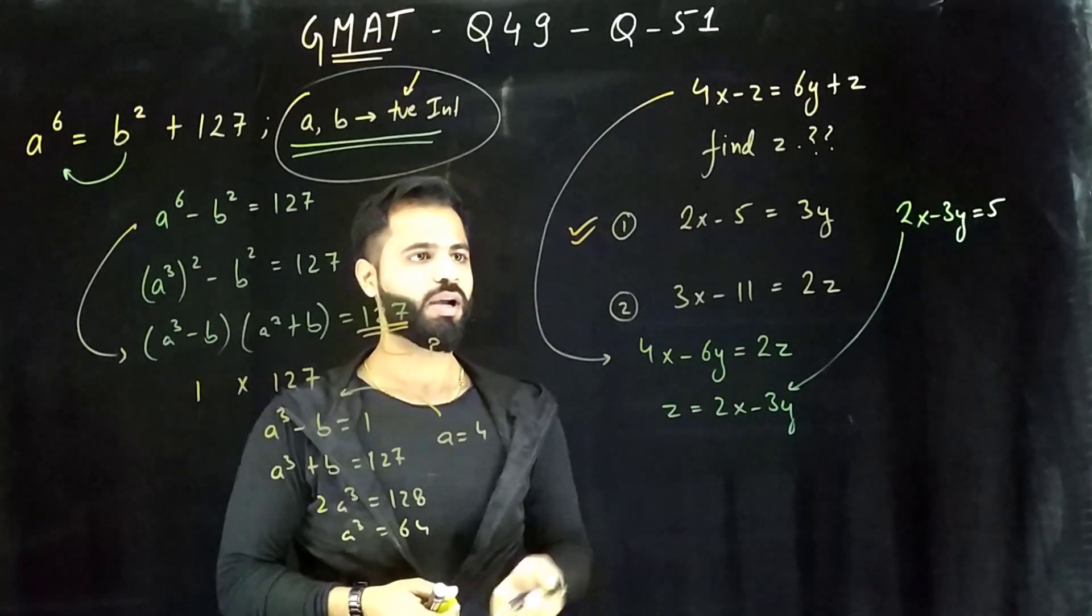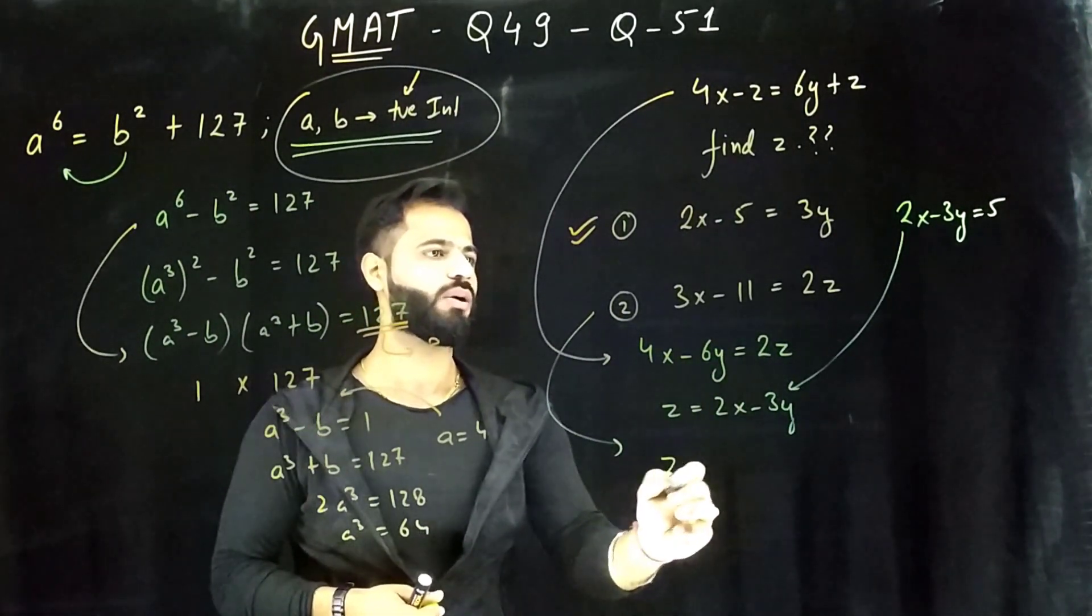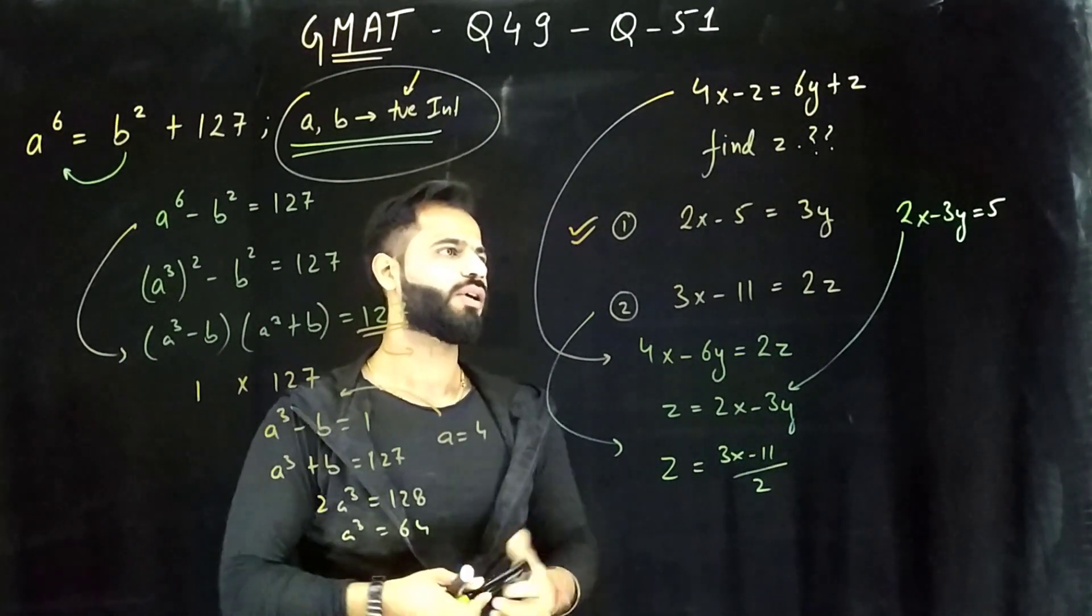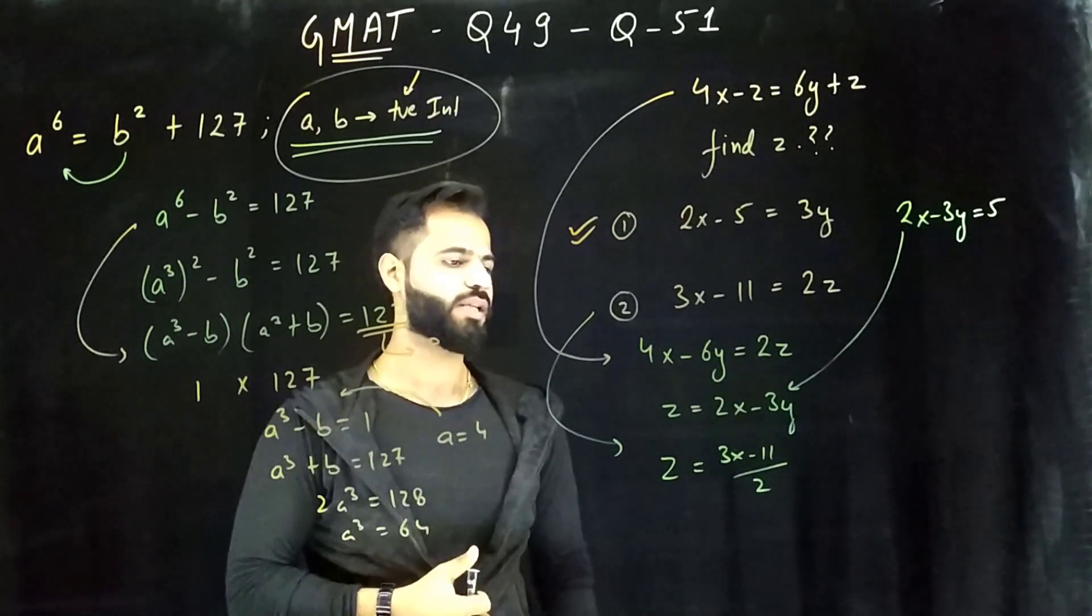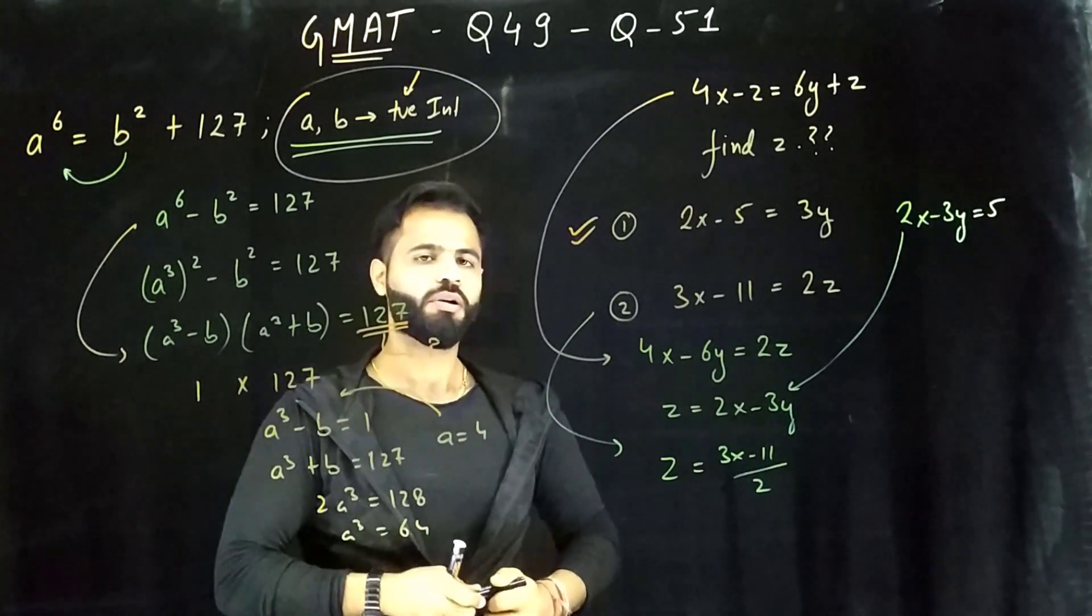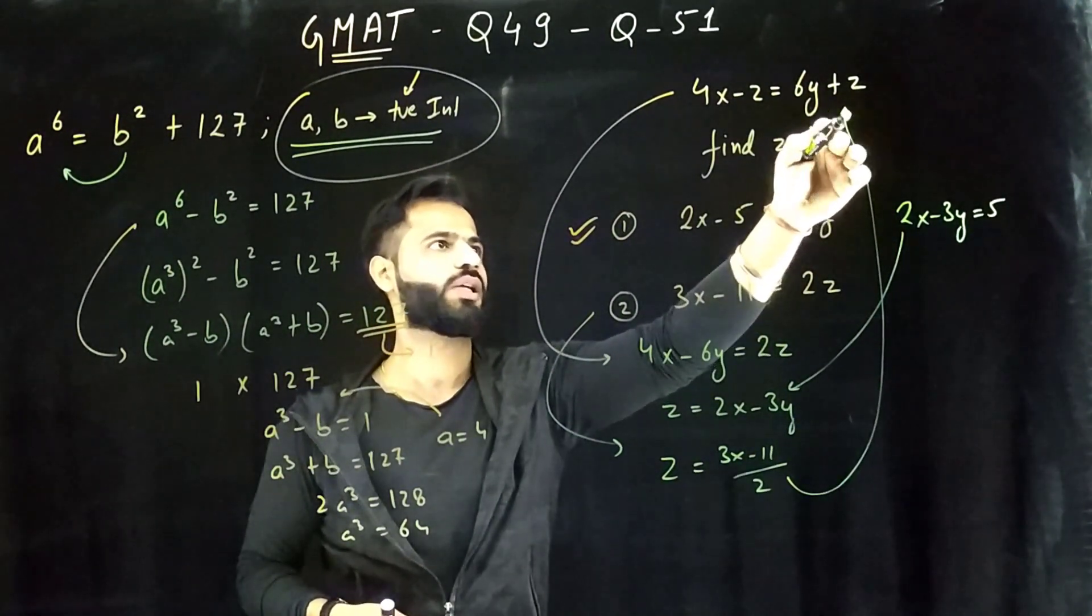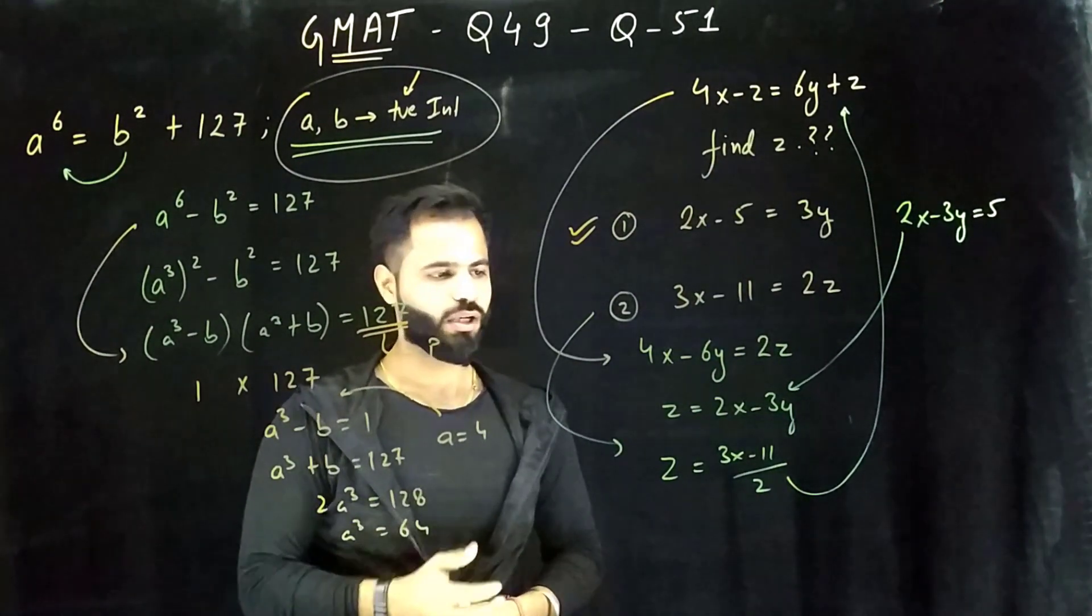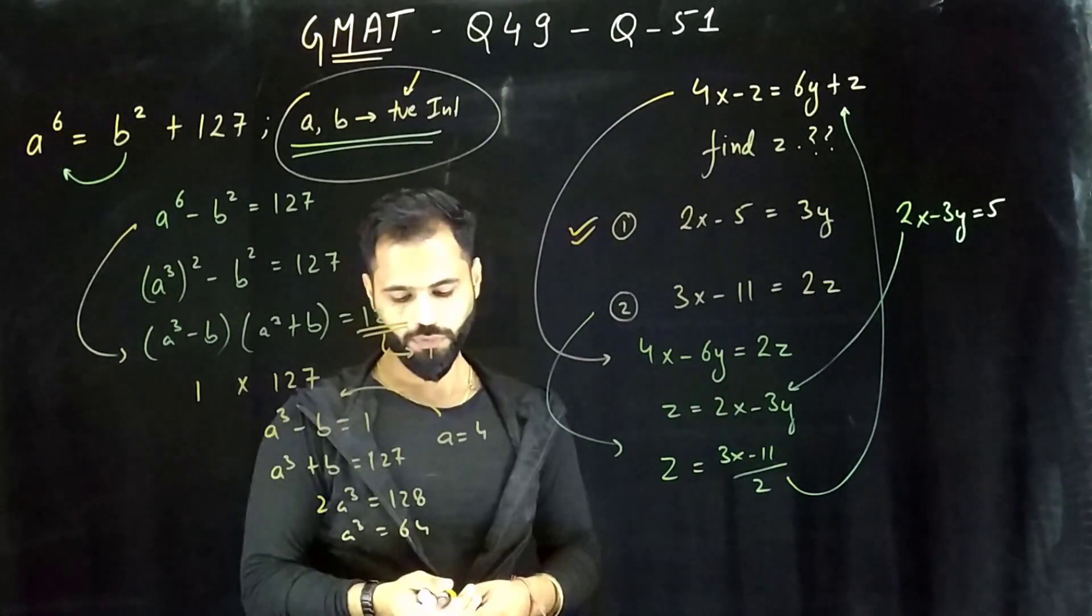Now let's go to the second statement. It gives us 3x minus 11 equals 2z, or z equals 3x minus 11 upon 2. Of course, I cannot find it out because here z is in the form of x. Here z is in the form of 2x minus 3y. So it is impossible for me to find out z. I can find out the relation between x and y by putting this over here in terms of z, and I'll get the equation in the form of x and y. But of course, I cannot find out the value of x, y or z. This will become insufficient. But A is sufficient.